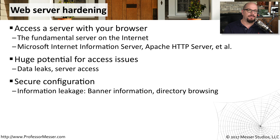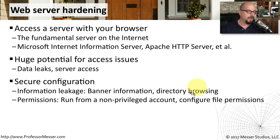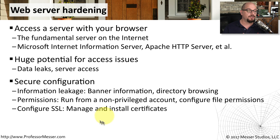A small sample of the types of hardening processes you would go through with a web server includes things like preventing information leakage. You can check the banner information, make sure that no one is able to browse directories on that web server, and you want to check permissions — that the web server itself is running from a non-privileged account so that nobody can take advantage of a privileged capability within the web server. You also want to make sure that all of the file permissions are configured properly, and if this is a web server, you may want to configure an SSL certificate so that all communication across the network is performed over an encrypted channel.